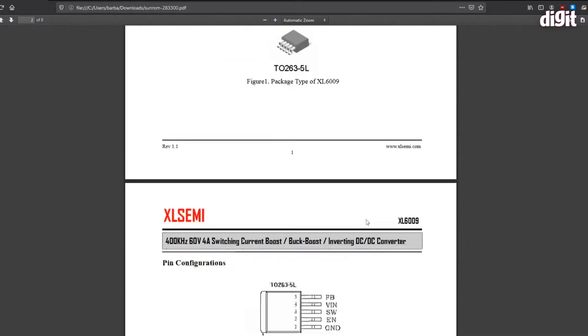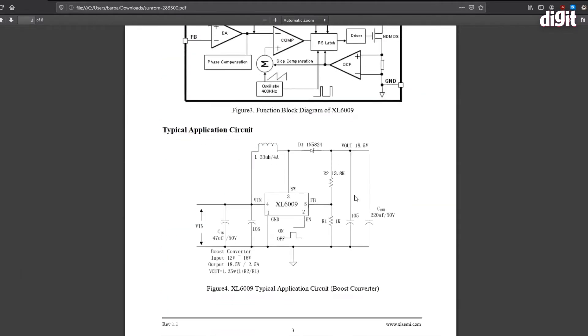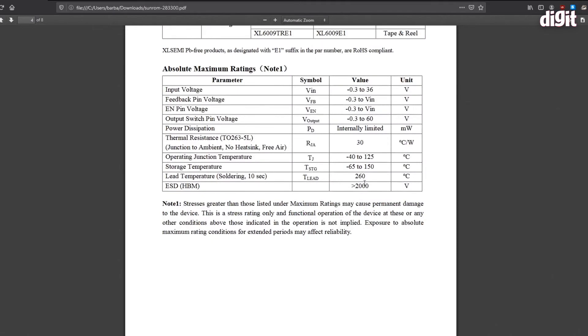The output voltage is shown a little lower down, along with the absolute maximum ratings of this module. The input voltage is -0.3 to 36 volts (VIN), and the feedback pin voltage as well as the EN pin voltage are related to VIN.